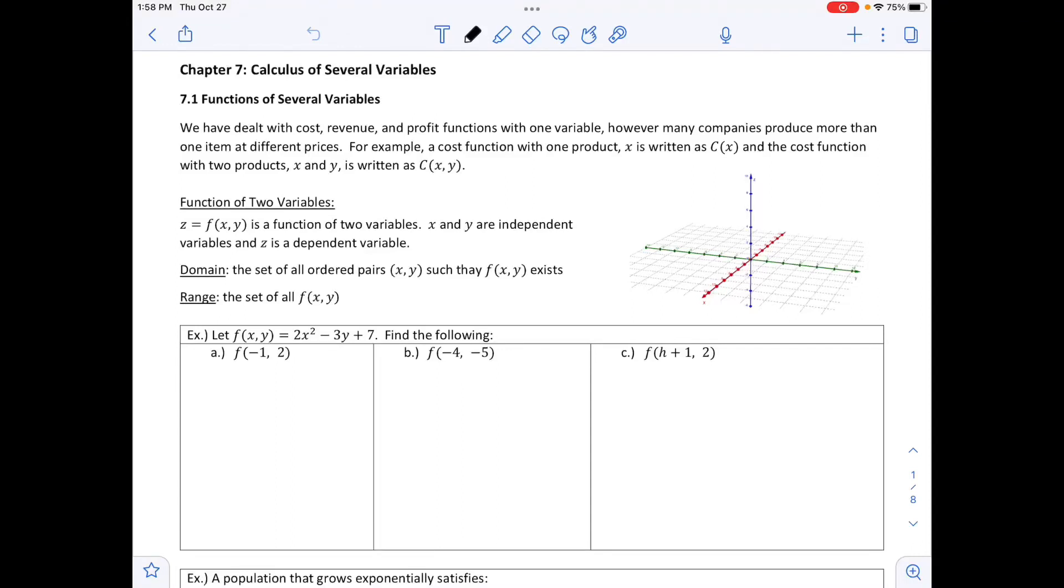We are in Chapter 7, Calculus of Several Variables, Section 7.1, Functions of Several Variables. First thing is we have dealt with cost, revenue, and profit with one variable. However, many companies produce more than one item at different prices.